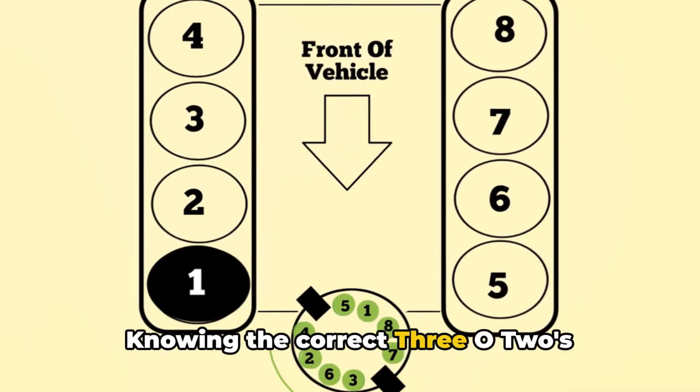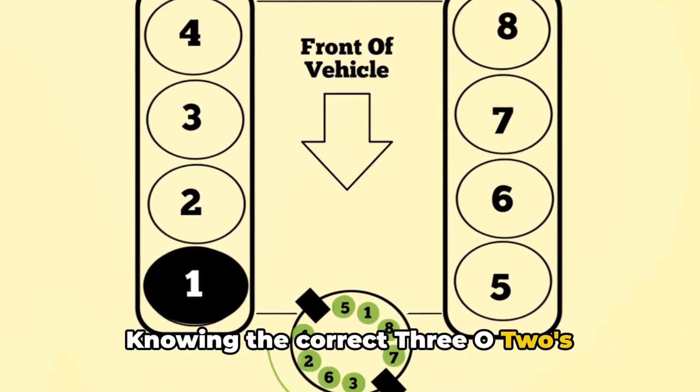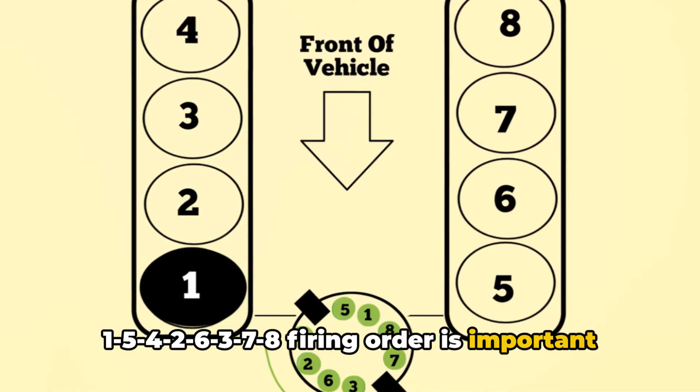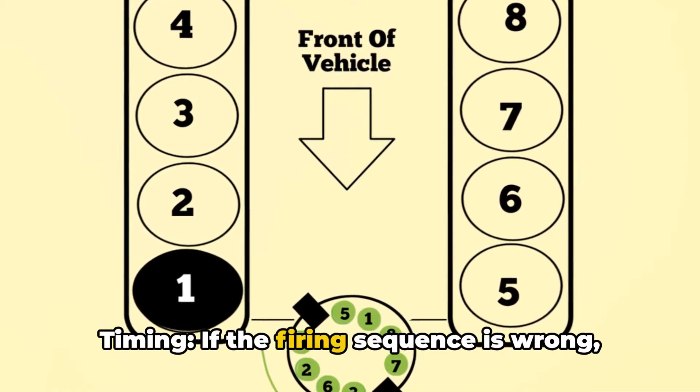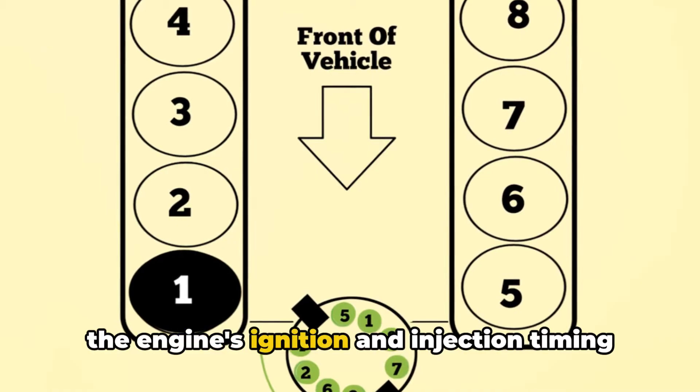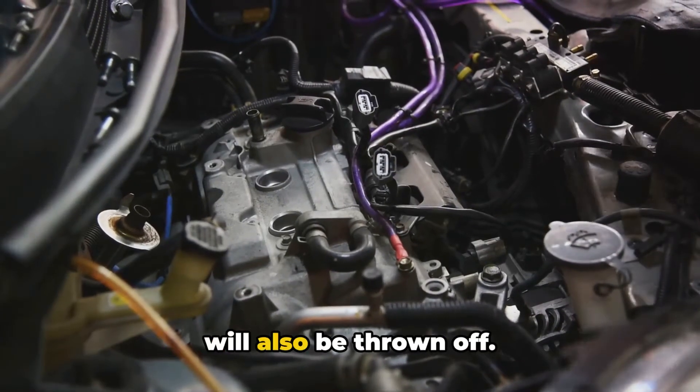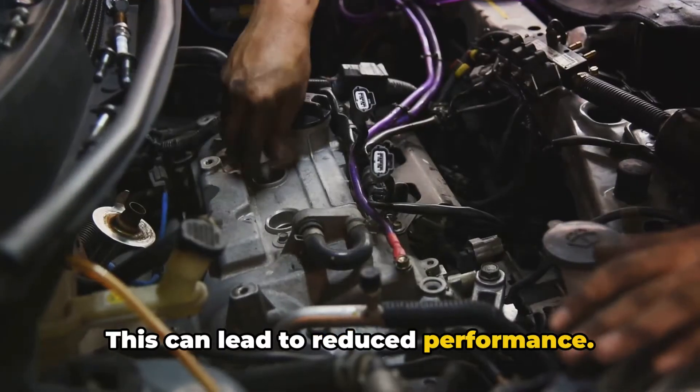Knowing the correct 302's 15426378 firing order is important for several reasons. Proper ignition timing: if the firing sequence is wrong, the engine's ignition and injection timing will also be thrown off. This can lead to reduced performance.